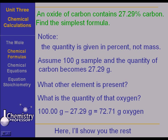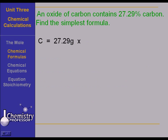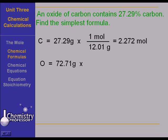Here, let me show you the rest of the problem. The carbon is 27.29 grams and we get that to moles by multiplying by 1 mole over 12.01 grams. And that's going to give us 2.272 moles carbon. The oxygen is 72.71 grams. We convert that to moles by multiplying by 1 mole over 16 grams. And that gives us 4.544 moles.